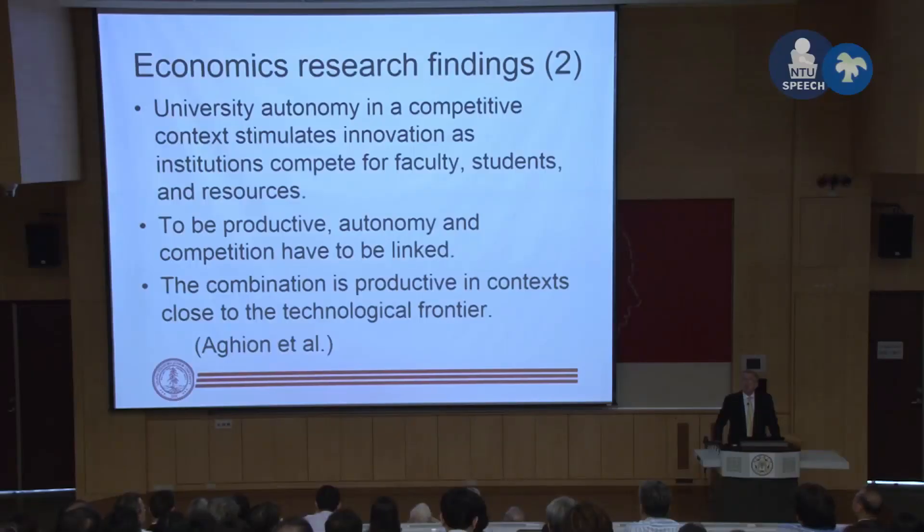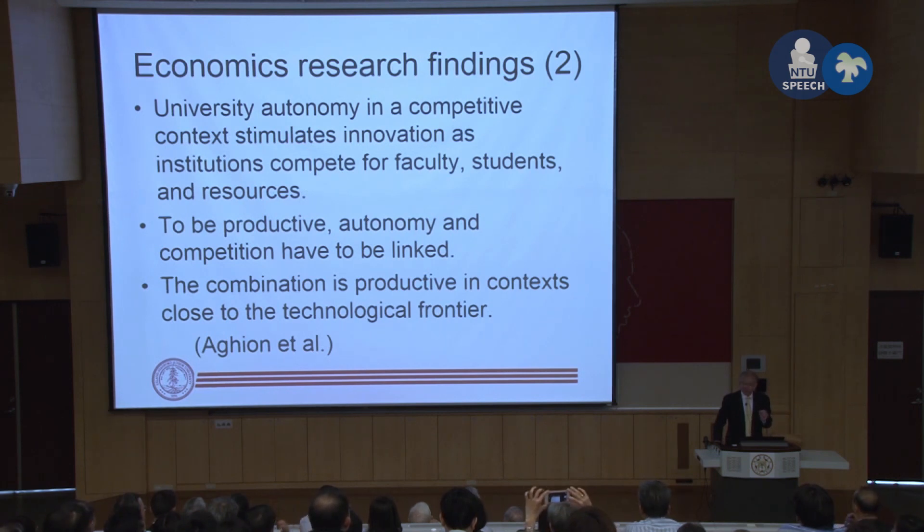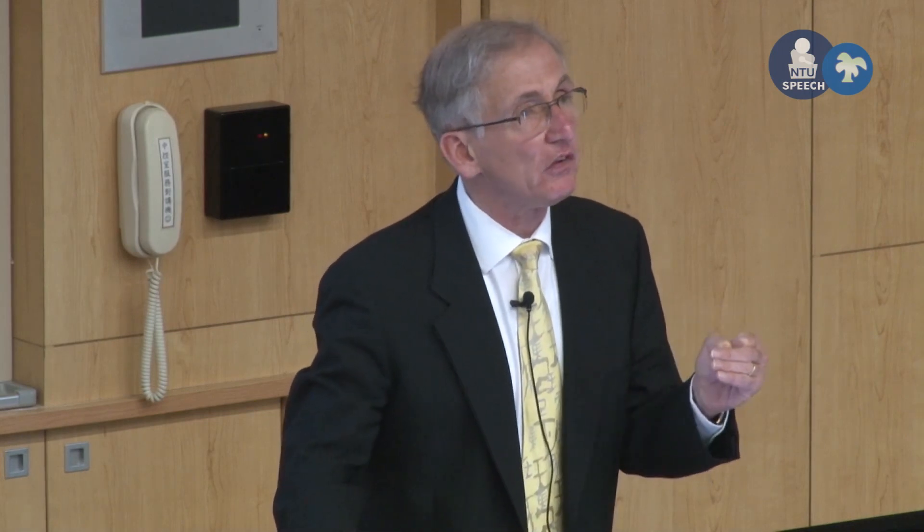The studies of Acemoglu, Hoxby, and others emphasize that to be productive, this competitive context has to be linked to autonomy — university autonomy and a competitive environment go together. The idea is that universities will respond to competition if they have the opportunity. Another finding is that competition is most productive in an environment close to the technological frontier — a big investment in the highest and most advanced research in a state like Alaska or Kentucky is not likely to be very productive, whereas it will be productive in states at the frontier, particularly California and Massachusetts.